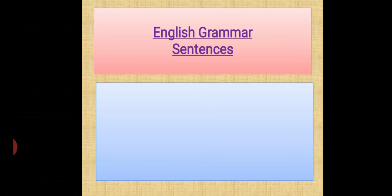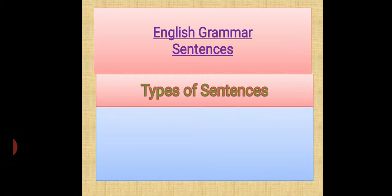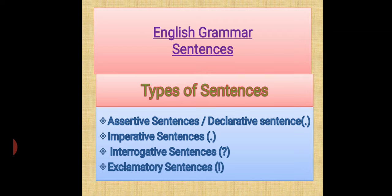In our previous video, we had studied about types of sentences. Assertive sentence and declarative sentence. These types of sentences start with a capital letter and end with a full stop. In this sentence, we find a general kind of declaration, statement, or any fact and figures. These sentences are divided into two parts: affirmative and negative. Affirmative sentence tells about some person or something, or you can say it is a general statement about a person. Whereas, negative sentence negates something or is negative in nature.